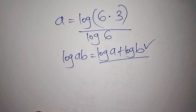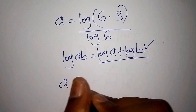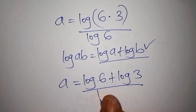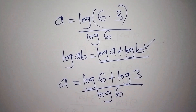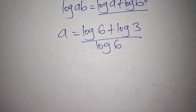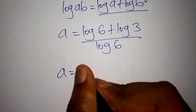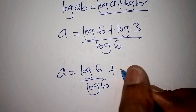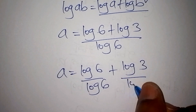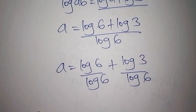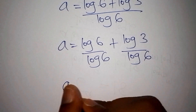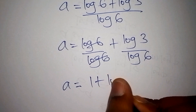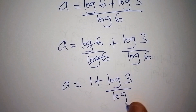Putting that into consideration, a is equal to log of 6 plus log of 3, all over log of 6. Dividing through, we get log 6 over log 6 plus log 3 over log 6. Since log 6 over log 6 equals 1, a is equal to 1 plus log 3 over log 6.